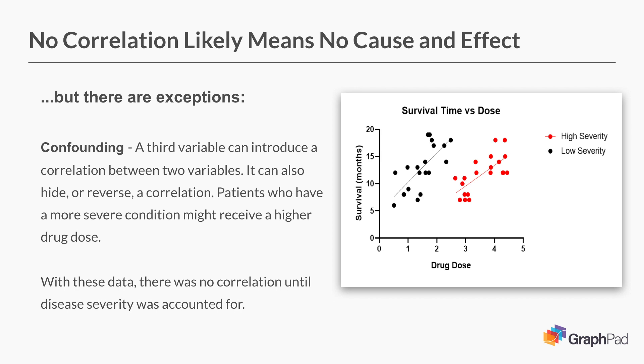Here I've added another variable. I've got high severity in the red — some people are more severe and got the higher dose. Makes sense. Maybe the doctor said, 'We've got to give these patients a higher dose.' And the low severity patients are in the black. So drug dose does have a big impact on survival. It's just an imbalance in the data — or confounding, a third variable — that made it look like there was no relationship.